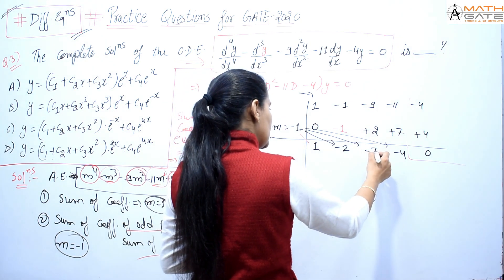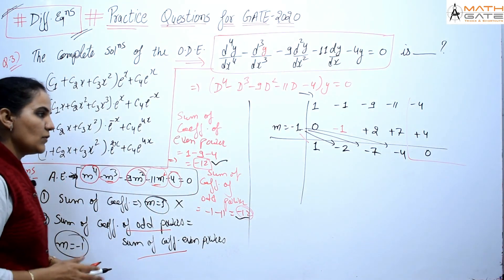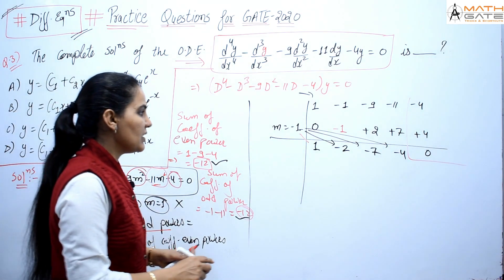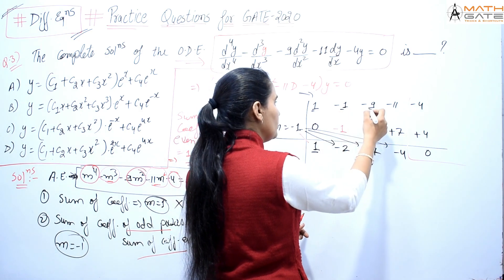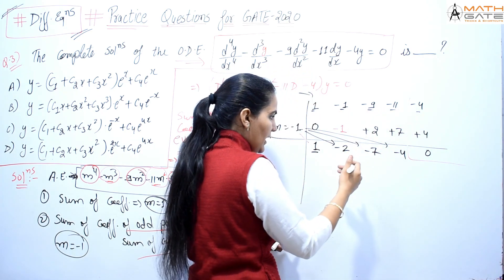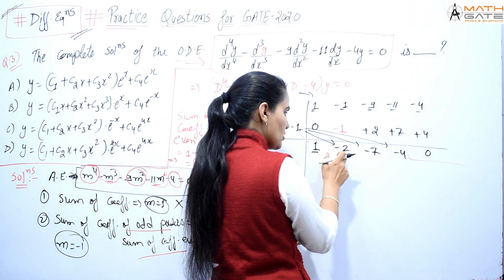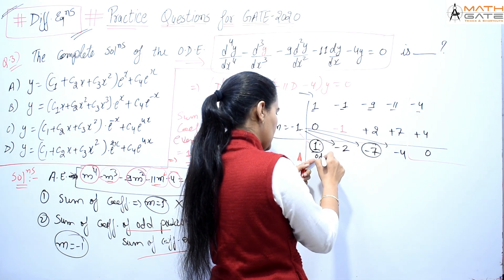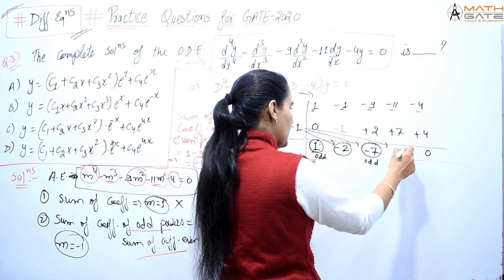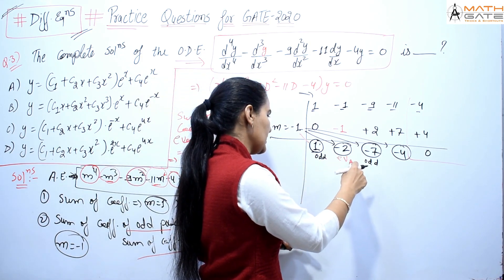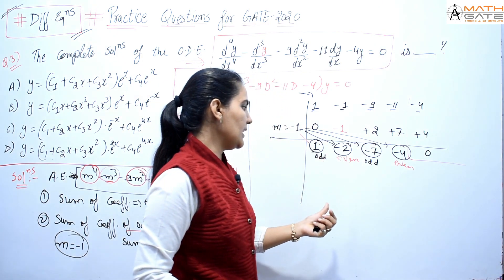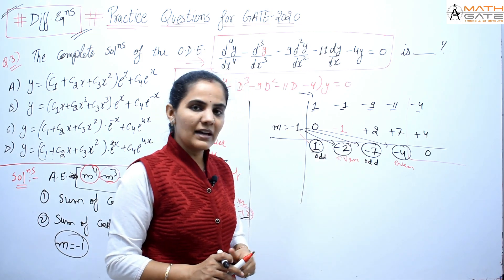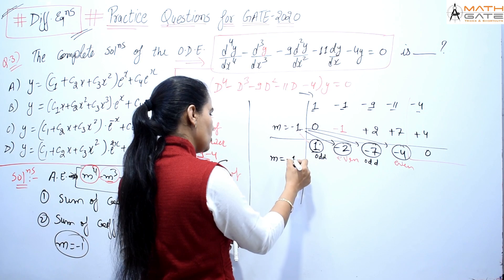Now the quotient is a cubic: 1, minus 2, minus 7, minus 4 — that's m³ minus 2m² minus 7m minus 4. We check again: sum of coefficients of even powers equals 1 plus minus 7 equals minus 6; sum of odd powers equals minus 2 plus minus 4 equals minus 6. They are equal, so m equals minus 1 is again a root.